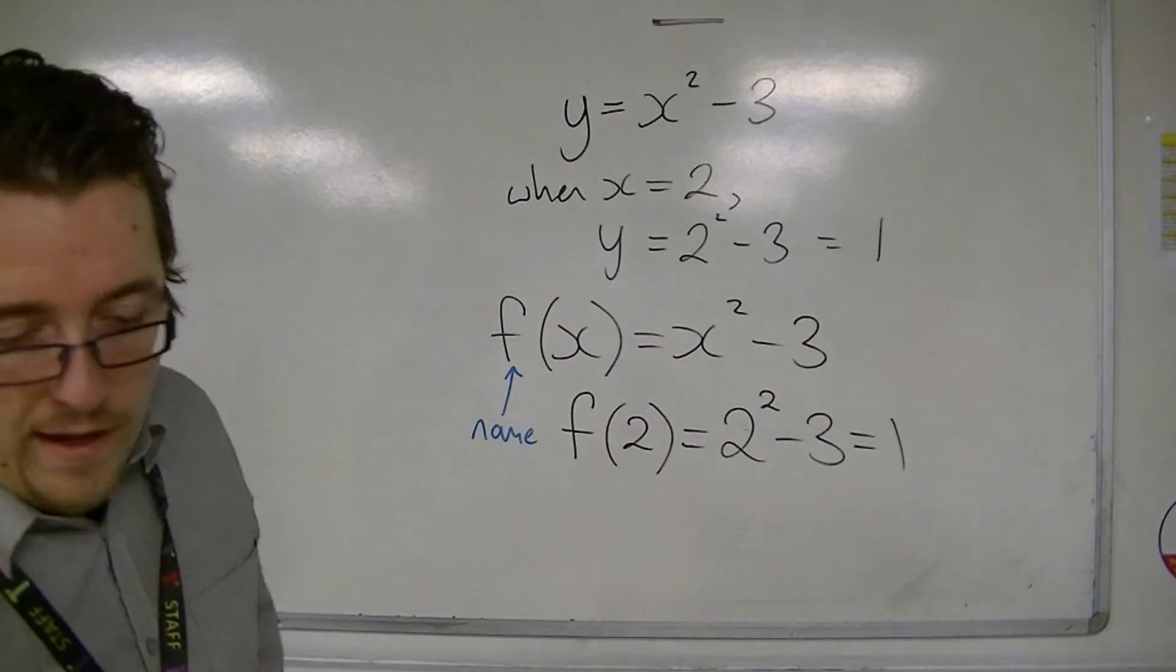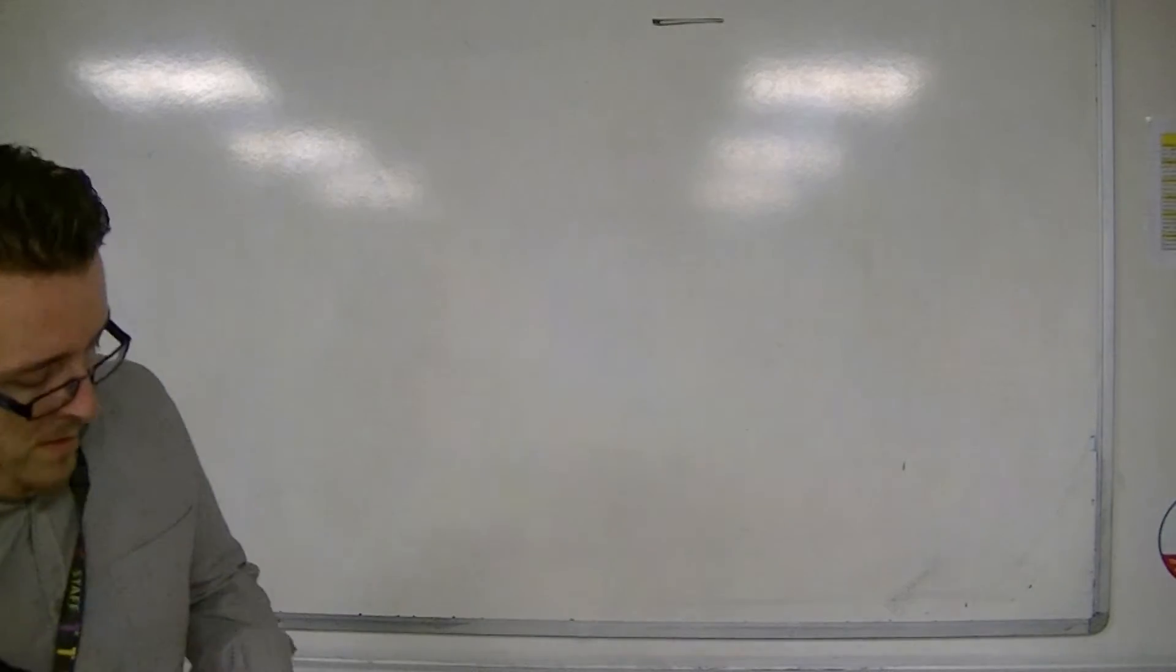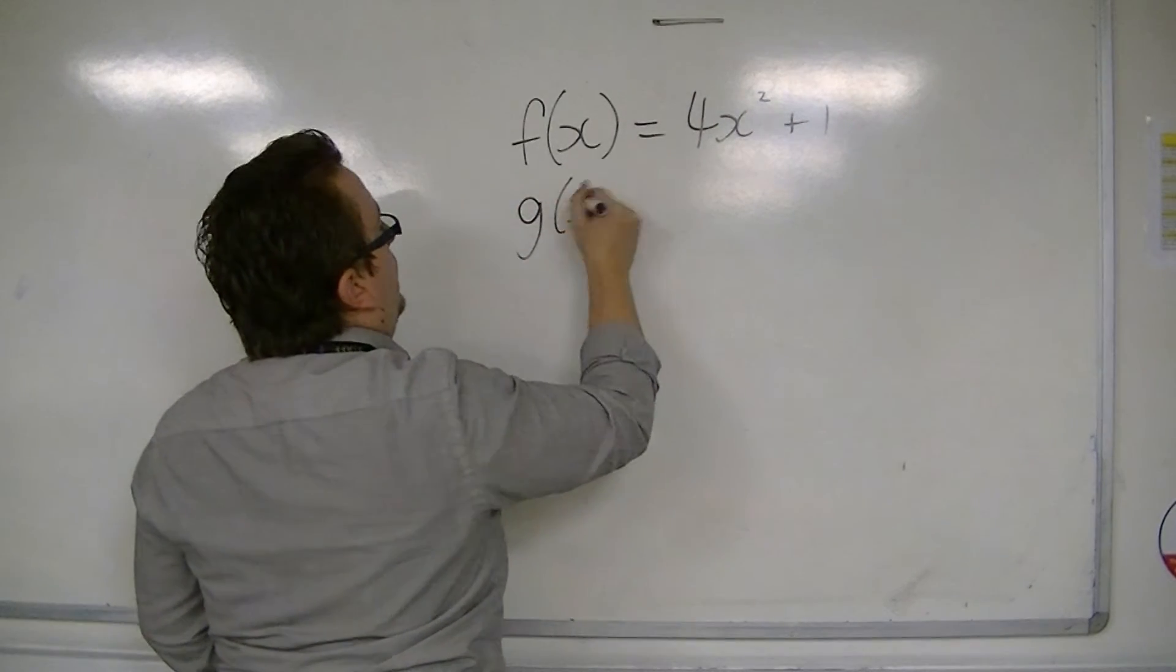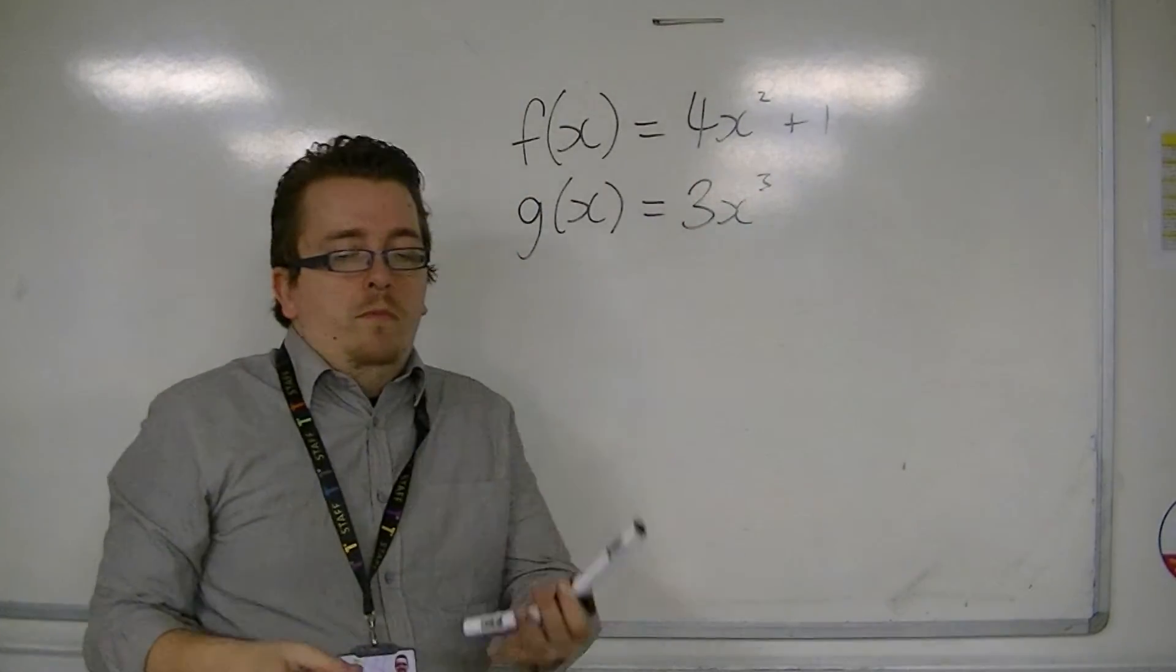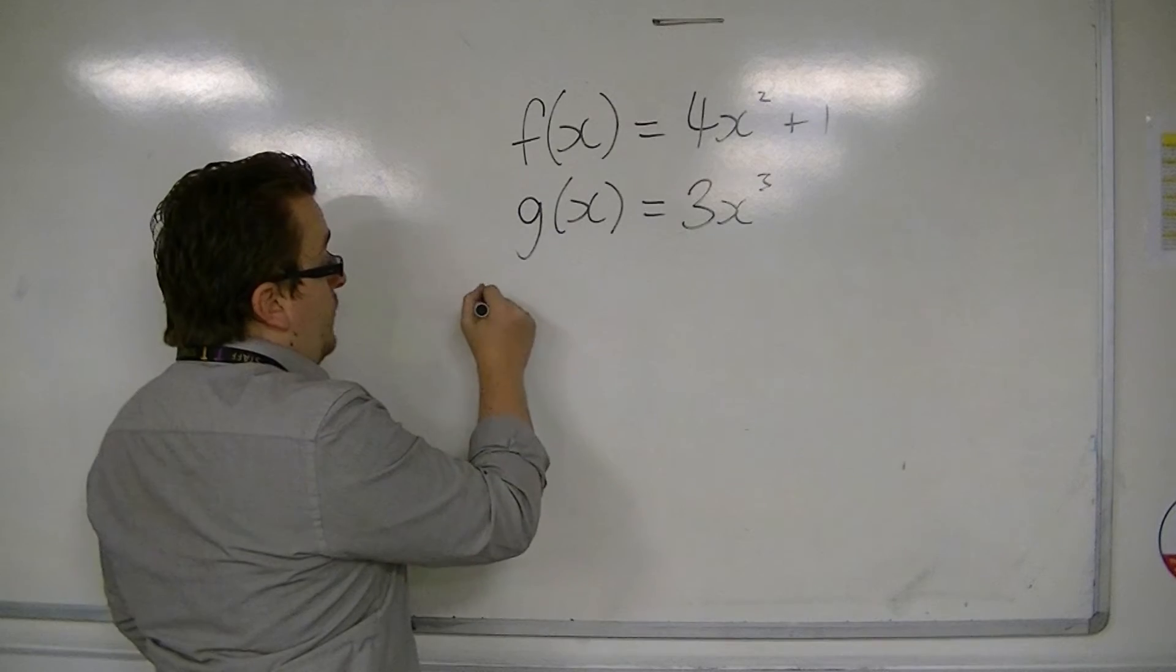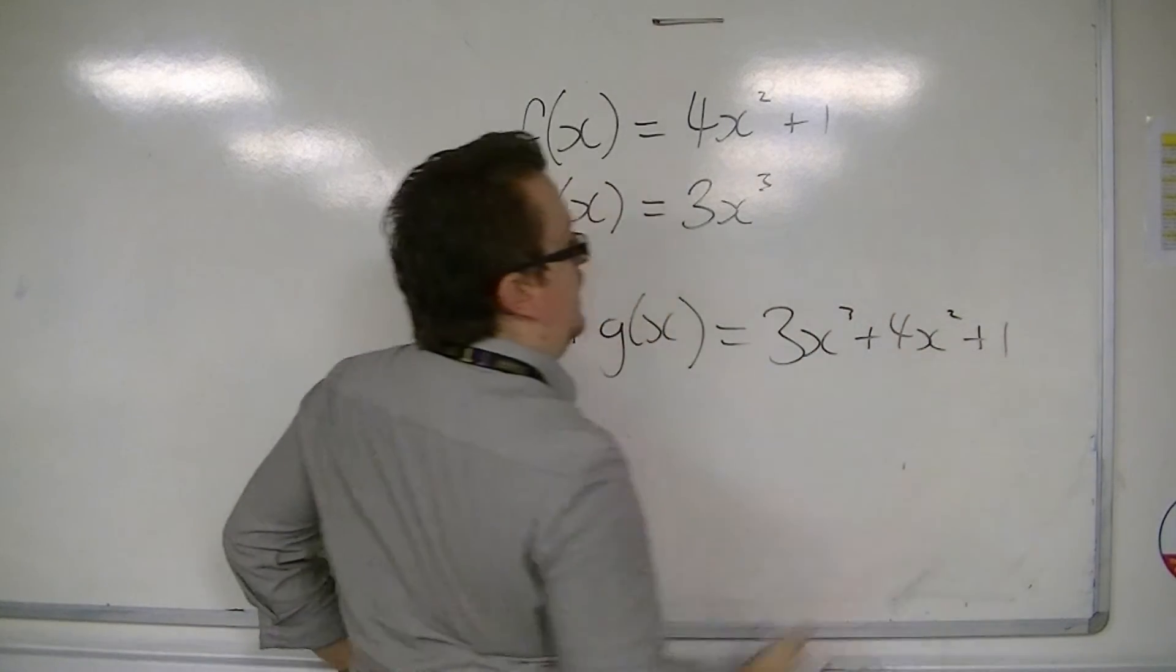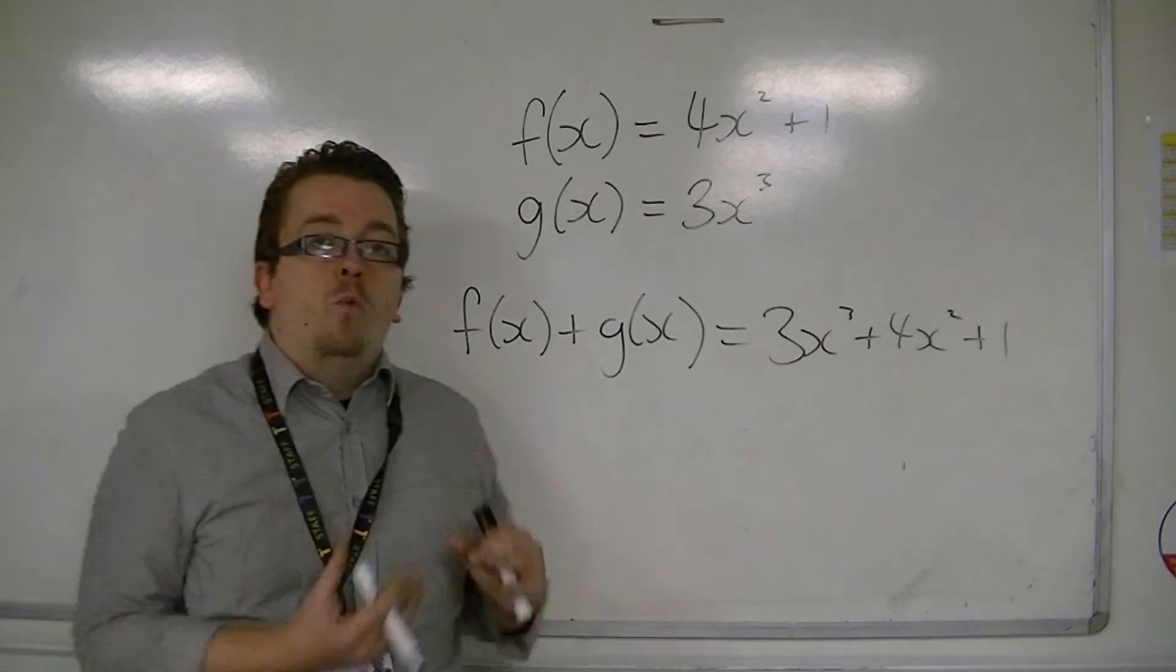It then allows us to look at things like, if we said f of x equals 4x squared plus 1, and g of x is equal to 3x cubed, then we're allowed to have this as our shorthand notation. f of x plus g of x is equal to 3x cubed plus 4x squared plus 1, and it just allows us to manipulate functions much more easily when we have named them.